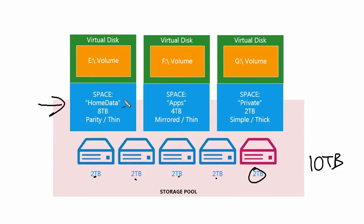This first one has been named 'Home Data' — each storage space has a name and a size. This one is 8 terabytes. It has a recovery mode as well as a provisioning mode. Thin provisioning means that this storage space won't actually occupy 8 terabytes right away; it will dynamically grow and physically consume space as it needs to. That's in contrast with thick provisioning, which means this one is going to physically take up 2 terabytes of space out of the storage pool right off the bat.